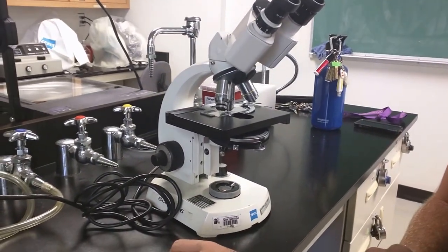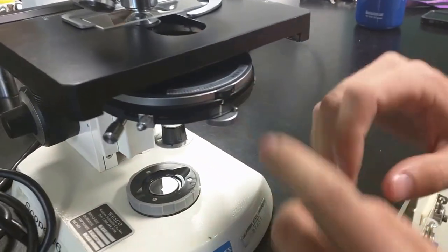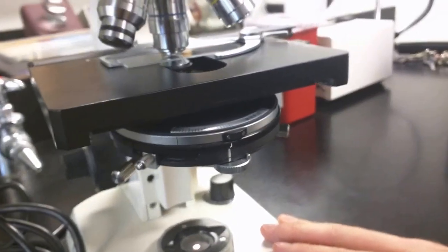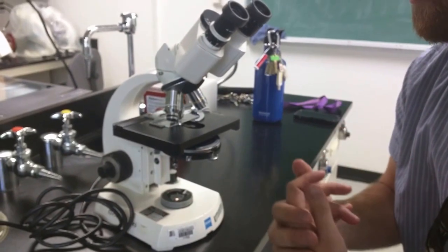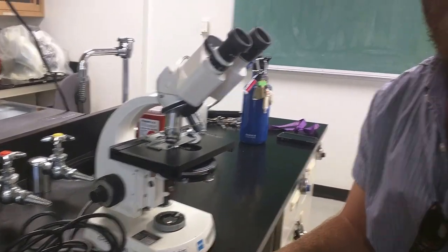So this is a video for Köhler illumination. Real quick, something I forgot to mention is make sure you're on J. That's for bright field. This is Köhler illumination for these scopes in 4209. And yeah, we will do another video for phase ring alignment. But for the most part, this is what you need to do to align your scope.